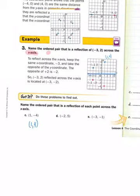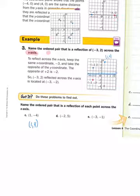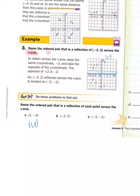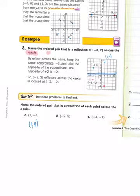All right. Now here is your job — try D and E on your own. Pause the video. When you do D and E, remember you're writing the reflection across the x-axis for each of those. We'll then go over it and see if you were right. Go ahead, pause it now.